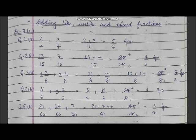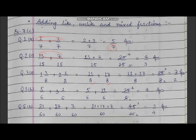Now, how will we add like, unlike, and mixed fractions? Adding like fractions is very easy because we have to add the numerators only, and the denominator will be written one time since it is common to both. If there are mixed fractions, first we will convert them into improper fractions and then add. So we add only the numerators — only the upper parts — and write the denominator the same. If we can reduce the terms, for example 20 upon 15, this comes in the table of 5: 15 comes 3 times and 20 comes 4 times, so the answer becomes 4 upon 3. So you can reduce the terms as well.